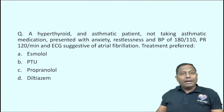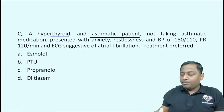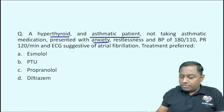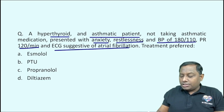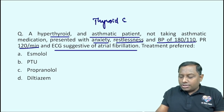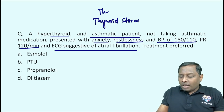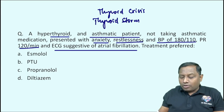Next: a hyperthyroid and asthmatic patient with a history of asthma not taking any asthmatic medication, presenting with anxiety, restlessness, high blood pressure, high pulse rate, and ECG suggestive of atrial fibrillation. This is a case of thyroid storm, also called thyroid crisis. Ideally the drug to give is propranolol.